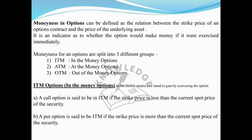Moneyness for an option can be of three groups: in the money option, at the money option, and out of the money option.